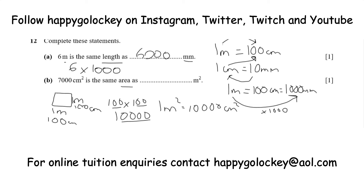So if we've only got 7,000 centimetres squared, it's not quite as much as 1 square metre. To get from metres squared to centimetres squared you multiply by 10,000, so to go backwards you divide by 10,000. So the last thing to do is 7,000 divided by 10,000. Just cross off some noughts: 7,000 divided by 10,000 is the same as 700 divided by 1,000, which is the same as 70 divided by 100, which is 7 divided by 10, and 7 tenths is 0.7.